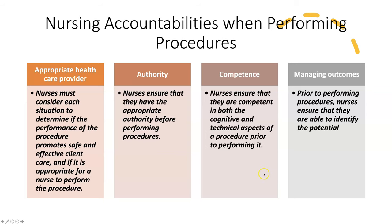As a nurse, you need to be accountable when performing these controlled acts. Nurses must consider each situation to determine if the performance of the procedure promotes safe and effective care. They must ensure they have the appropriate authority before performing procedures, have the competence to perform them, and understand how to manage the outcomes — including any potential things that could go wrong.